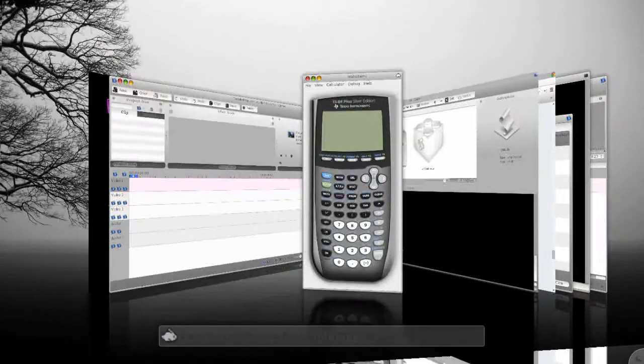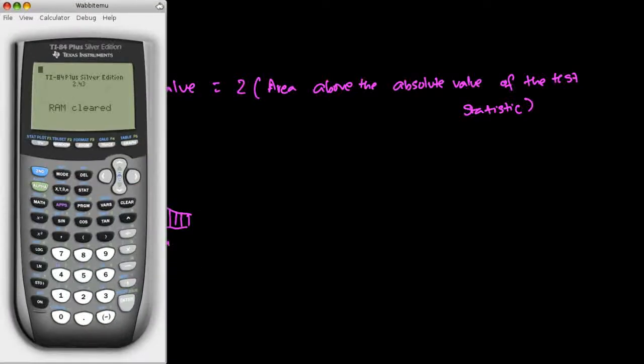I'm going to make use of the calculator here. If you have a TI calculator, if you press second vars, number 2, you have to specify the beginning point, which is 0.5424. The ending point, which is infinity - second comma would bring you E, E99 corresponds to infinity. Since the test statistic is rather a standard normal, the mean is 0 and the standard deviation is 1.